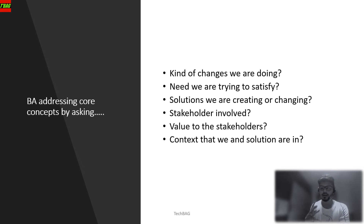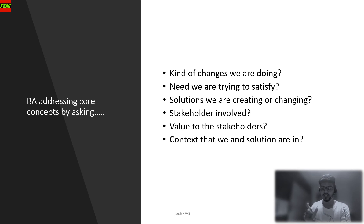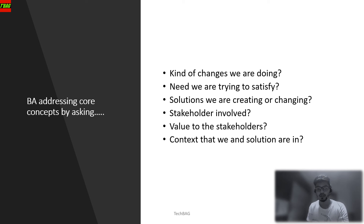When working as a BA on a project and applying all six core concepts, the first question you ask is: what kind of change are we going to make? You ask this question to the stakeholders. The second question relates to need: what are we trying to satisfy here? When you meet stakeholders, they tell you what they need, but you also ask in reverse — identify the problem statement, then determine what change is needed to solve it. For solutions, you ask: what are we trying to achieve or create within this particular scope?